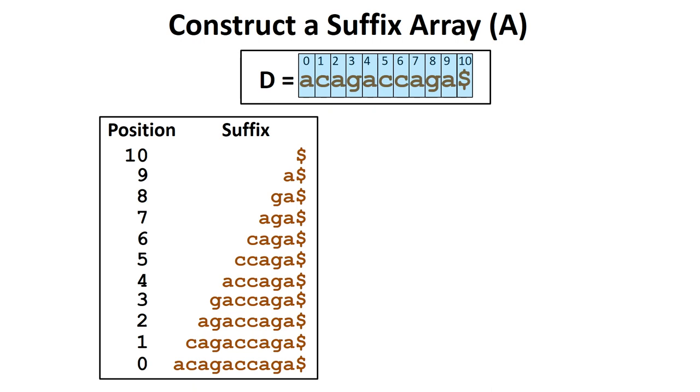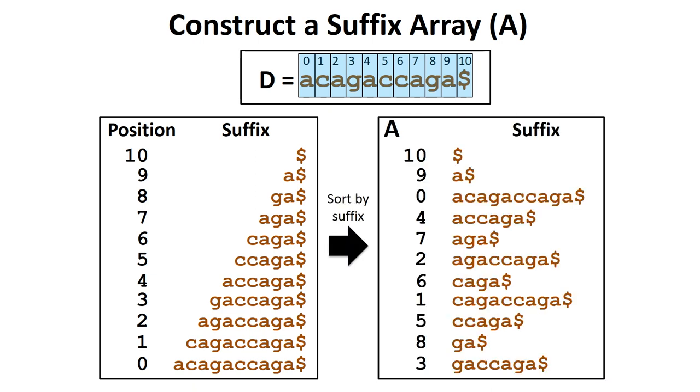We then sort these suffixes alphabetically, while also keeping track of the position of each suffix. We can convert a suffix array into a suffix tree by merging the common suffixes in the list of sorted suffixes.